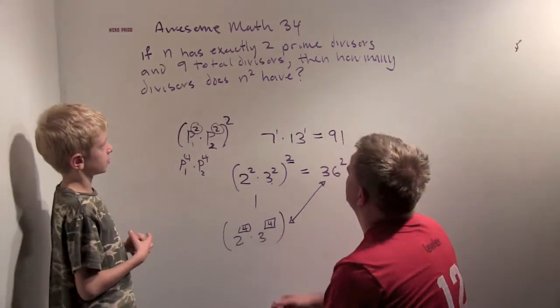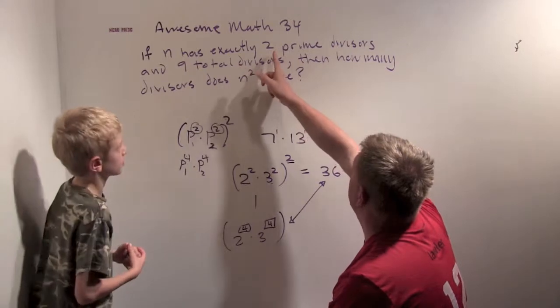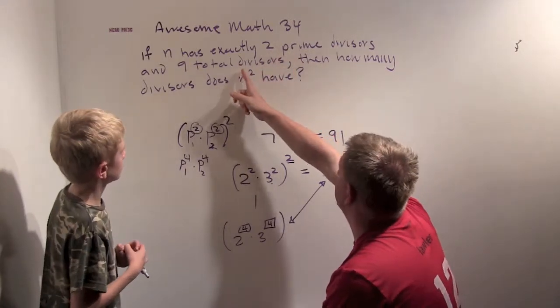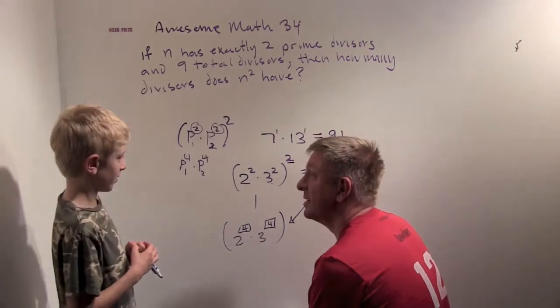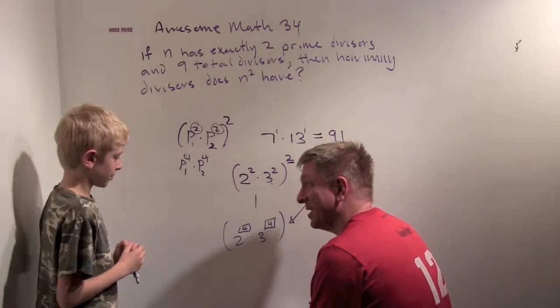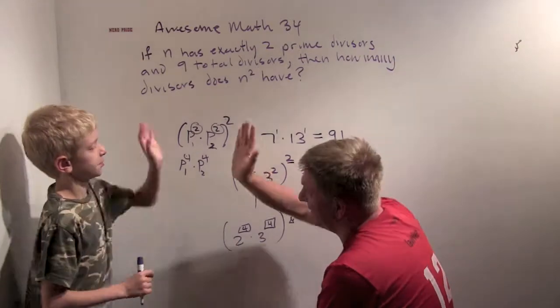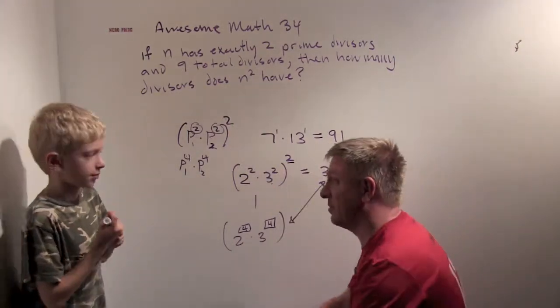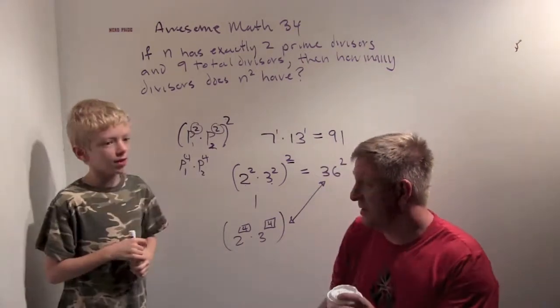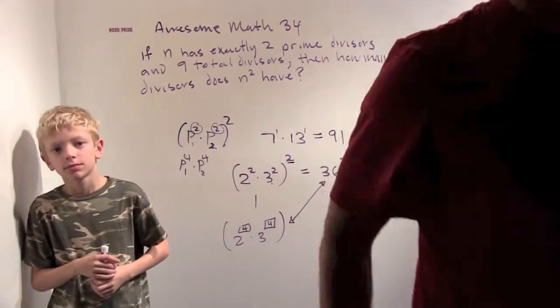Whoa. So, if a number has exactly 2 prime divisors and 9 total divisors, then how many divisors does n squared have? 25. Wow, we figured it out. Pretty cool, right? Alright. Good job, sweetie. That's it. These challenge problems, pretty challenging, right? Pretty challenging.